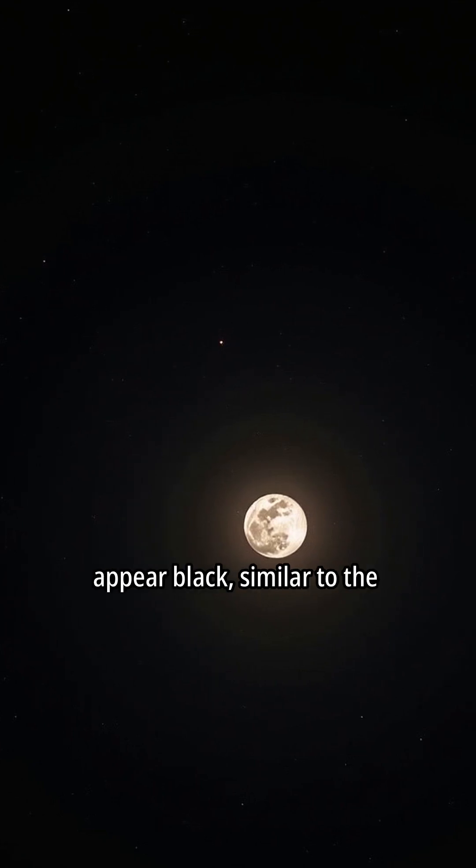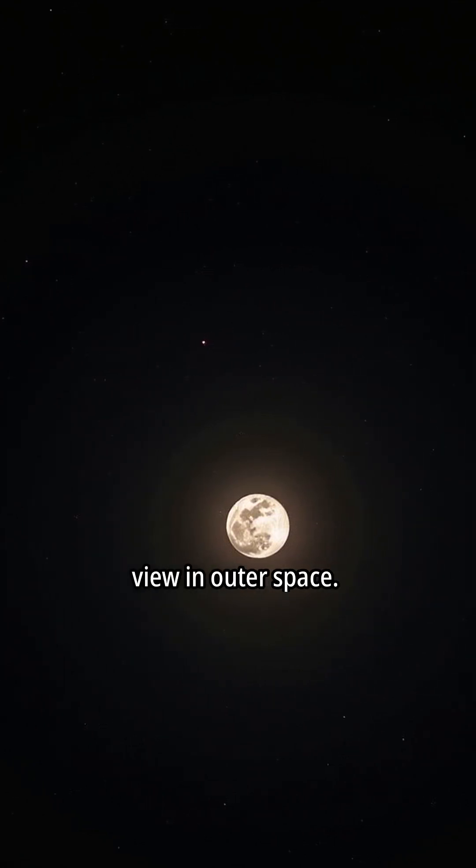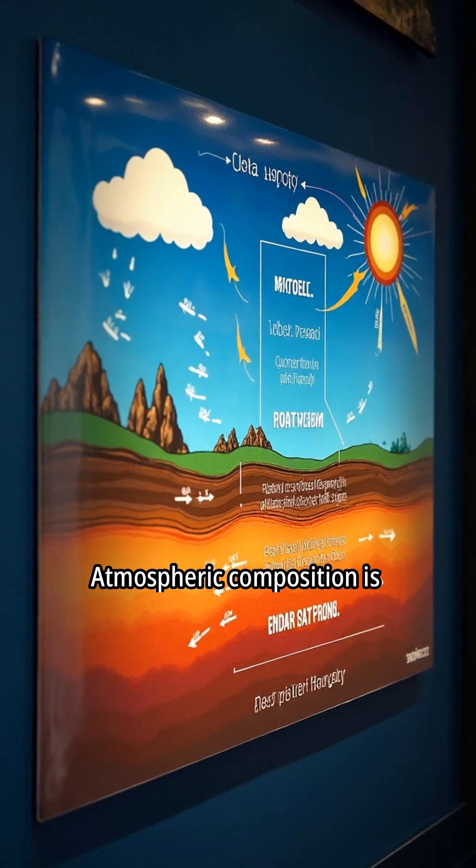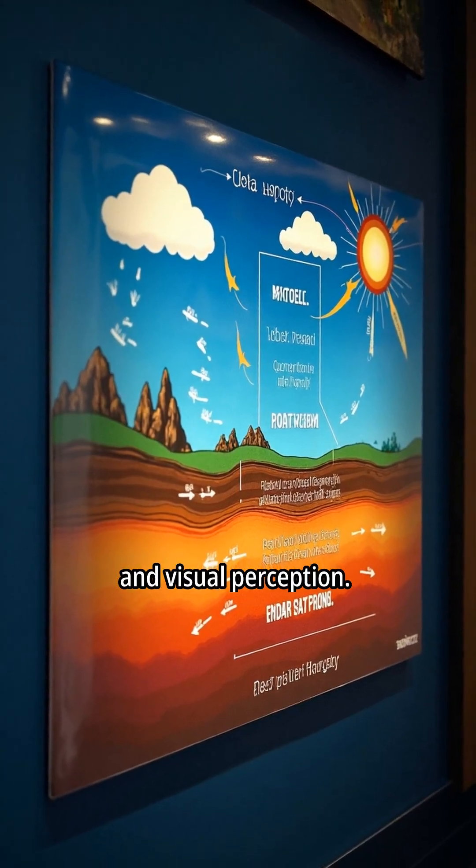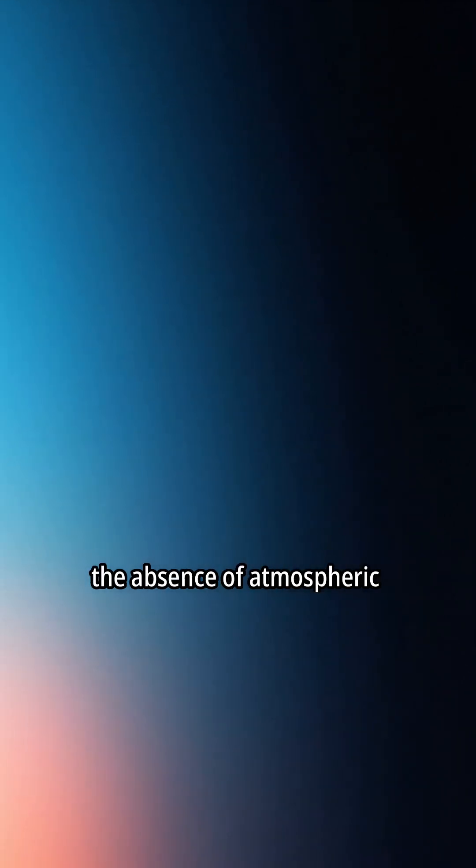Consequently, the sky would appear black, similar to the view in outer space. Atmospheric composition is crucial for light diffusion and visual perception. The abrupt transition from blue to black visually demonstrates the absence of atmospheric scattering.